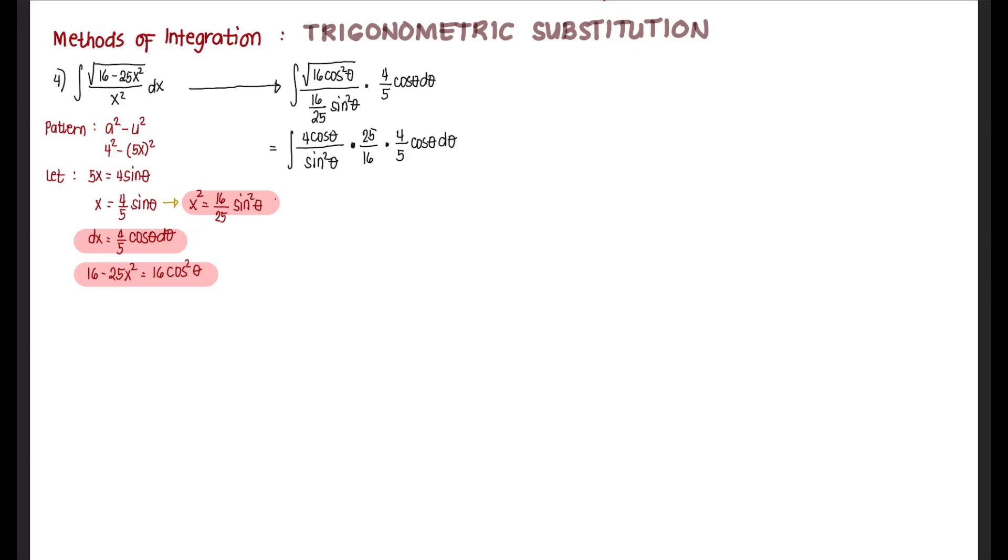We can cancel out some of the constants. We can cancel out 16 because we have 4 and 4 here. Then we can cancel out 5, so what's left is 5 in the numerator. So 5 integral, we multiply cosine and cosine here. That gives us cosine squared theta and sine squared theta in the denominator, d theta.